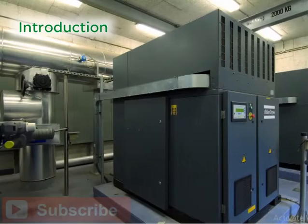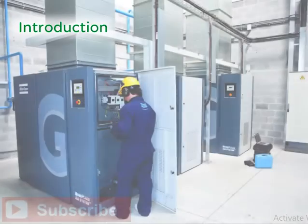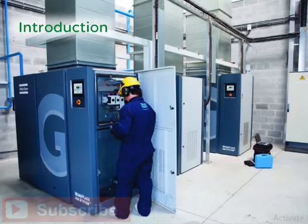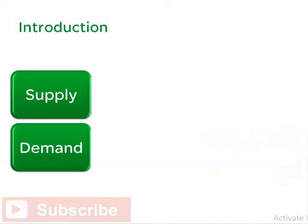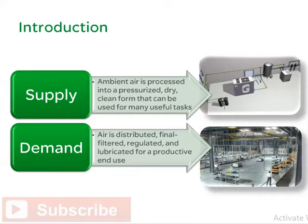Compressed air system components can usually be identified by the major function that they provide, whether the function is related to compression, conditioning, filtration, distribution, and some nature of end use. Most systems have a supply side and a demand side. The supply side is normally where ambient air is processed into a pressurized, dry, clean form that can be used for many useful tasks. The demand side is the portion of the plant where air is distributed, final filtered, regulated, and perhaps lubricated for a productive end use. The images in this slide depict both the supply side and the demand side of a typical industrial compressed air system.